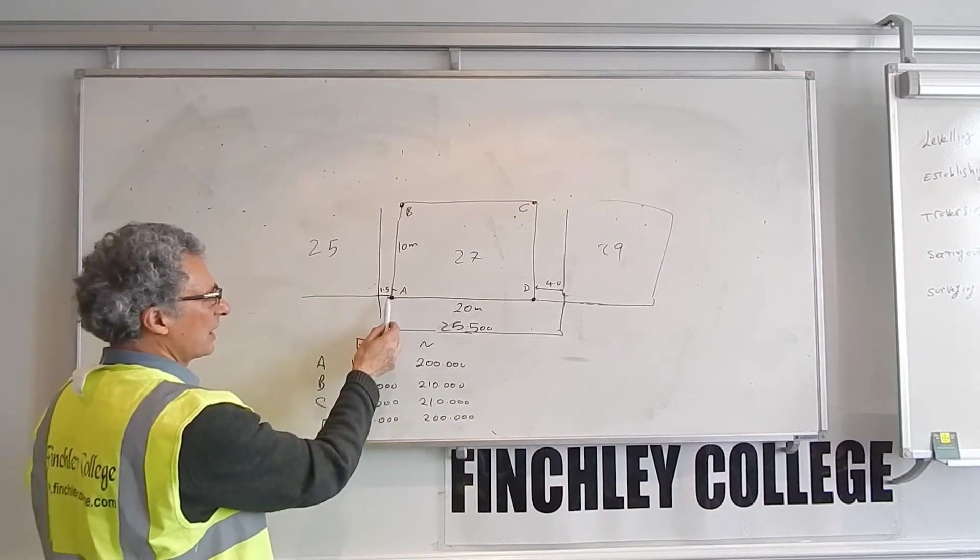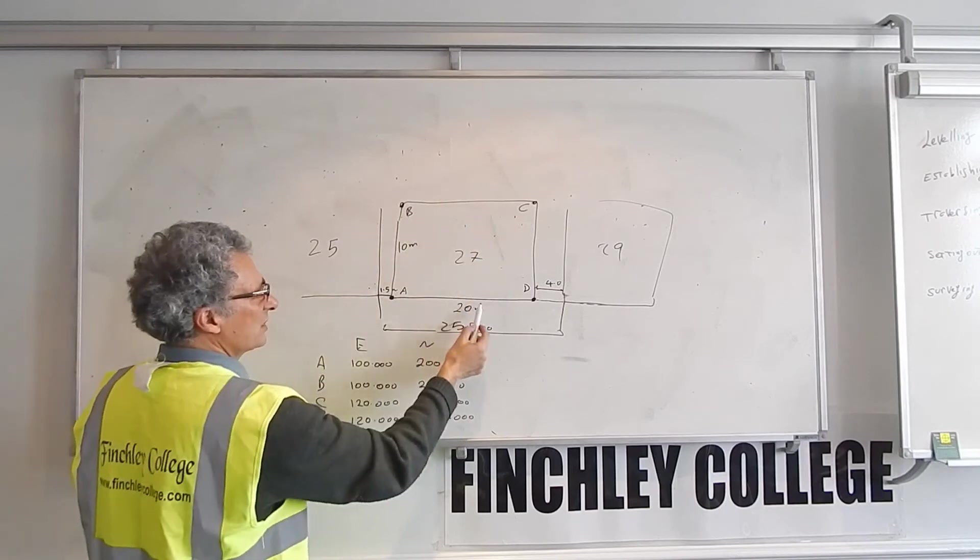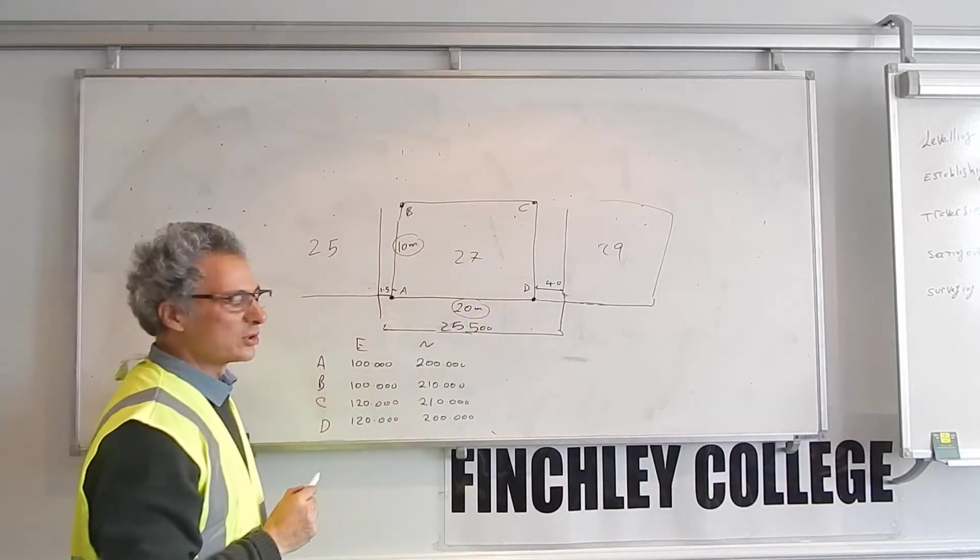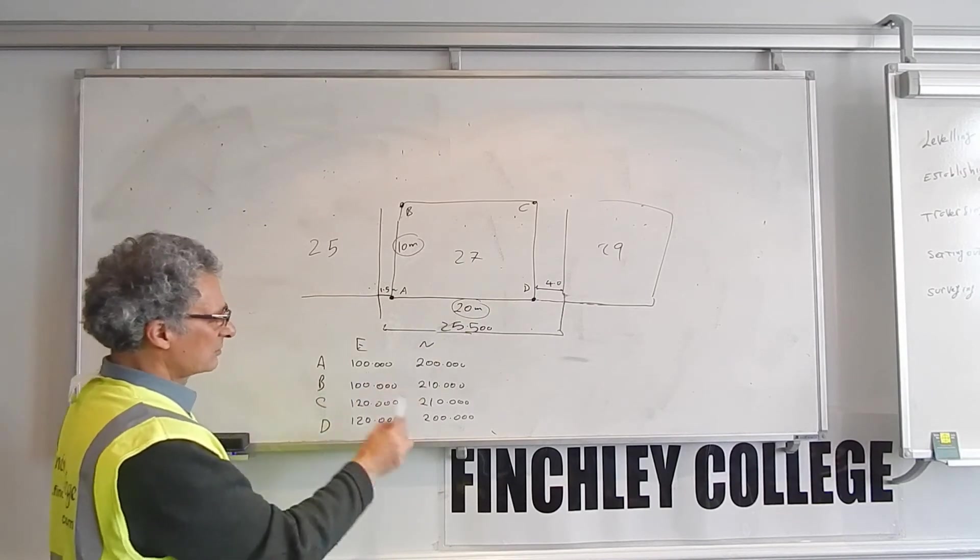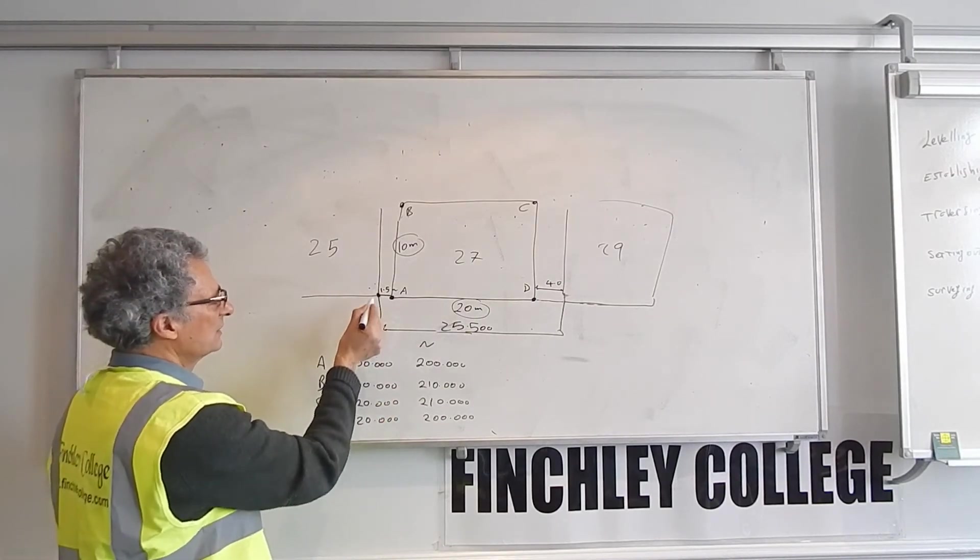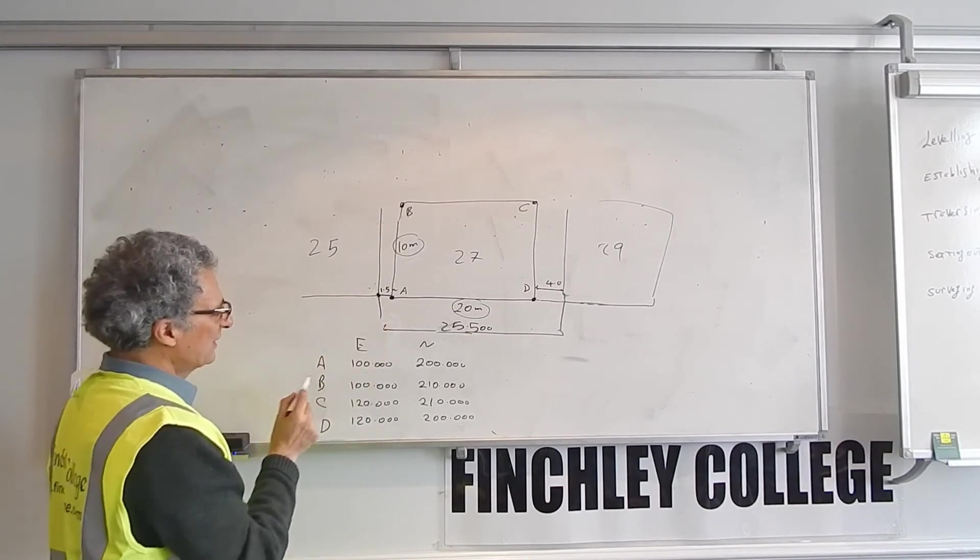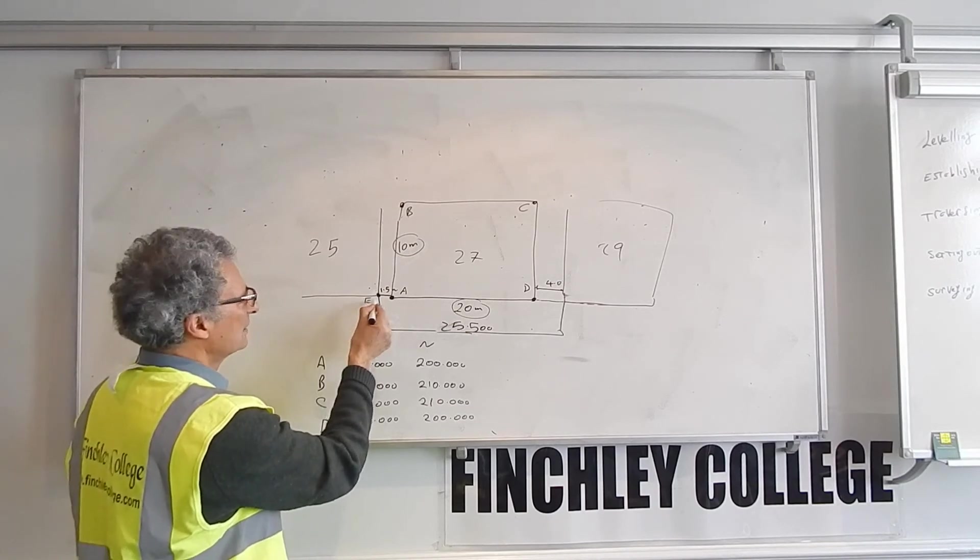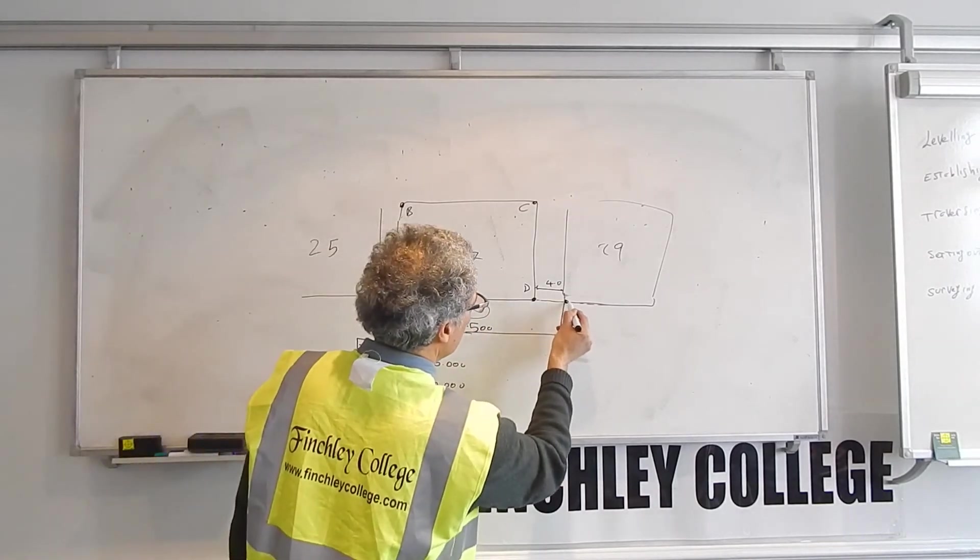So the first thing I do, I establish the control based on the dimensions of the drawing. I establish coordinates for the four corners of the building, and I'll write it down here. And then I will work out the coordinate for this corner. This corner, the easting will be 1.5 less, therefore will be 98.5. So if I call this point E and this point here F,